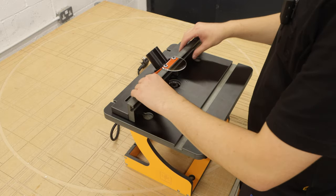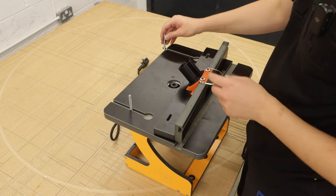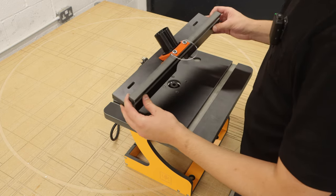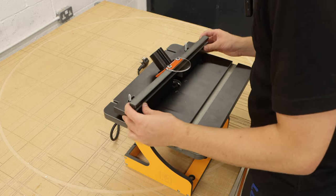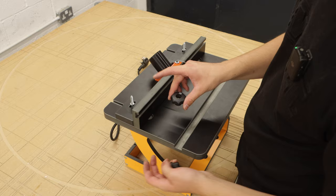Finally to install the fence, you have these two T-bolts that slide into the track. The fence goes on top of those, then you have a couple of washers and the locking knobs.